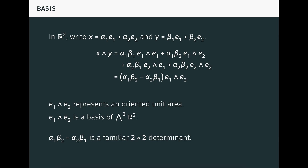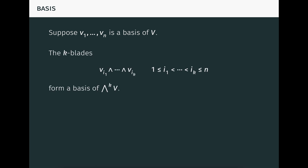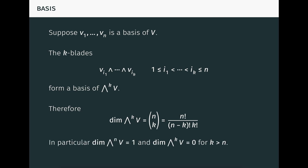The scalar coefficient alpha1 beta2 minus alpha2 beta1 is just the familiar 2×2 determinant of the matrix with the coordinates of x and y. This makes sense from what we already know about the determinant from prior videos, as it's the factor by which the unit area must be scaled to get the oriented area determined by x and y. More generally, suppose that v1 to vn is a basis of v, here assumed to be n-dimensional. Then the k-blades of distinct basis vectors with indices in ascending order form a basis of wedge k v. It follows that the dimension of wedge k v is n choose k — that is, the number of ways to choose k elements from n elements. In particular, the dimension of the nth exterior power is 1, and the dimension of higher exterior powers is 0. These algebraic facts align with our earlier informal geometric reasoning.